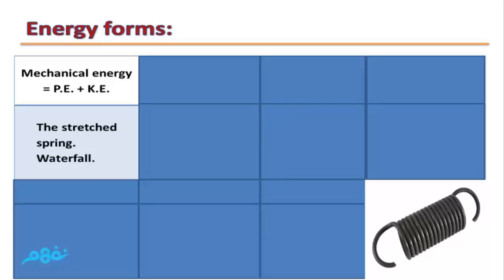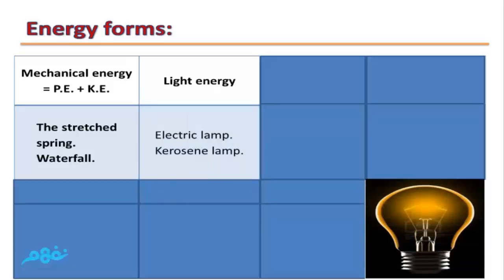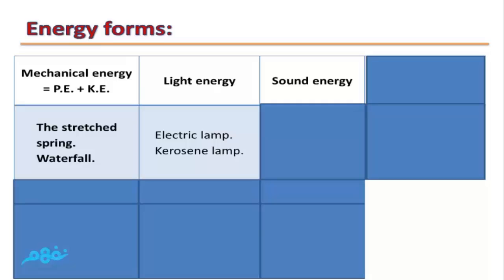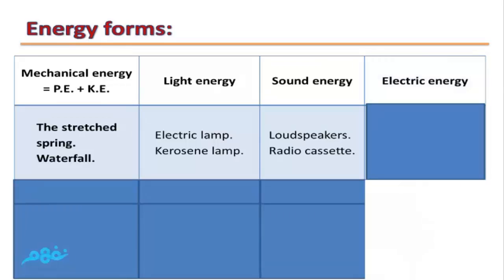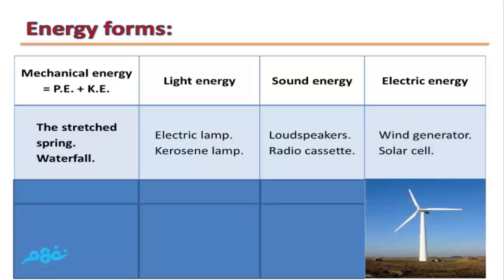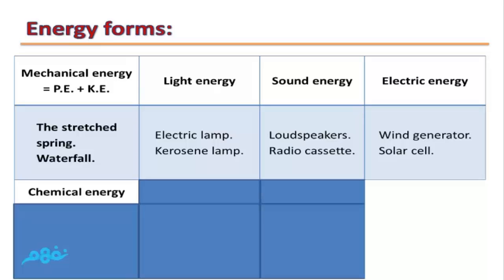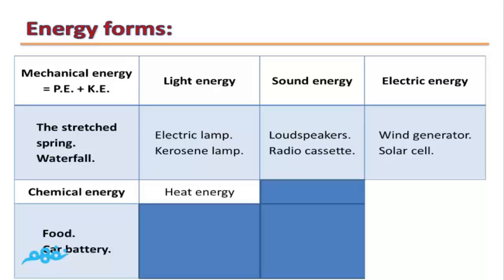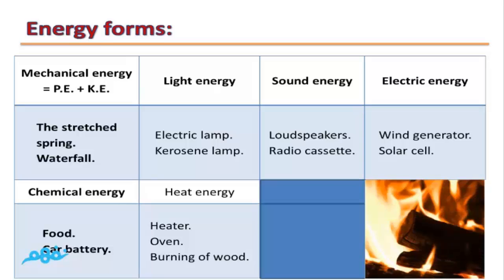Examples of mechanical energy: stretched spring and waterfall. The second form is light energy — examples: electric lamp and kerosene lamp. The third form is sound energy, produced from loudspeakers and radio cassettes. The fourth form is electric energy, generated from wind generators and solar cells. The fifth form is chemical energy, stored inside food and car batteries. The sixth form is heat energy, produced from heaters, ovens, and burning of food.